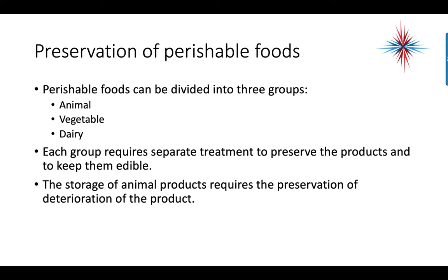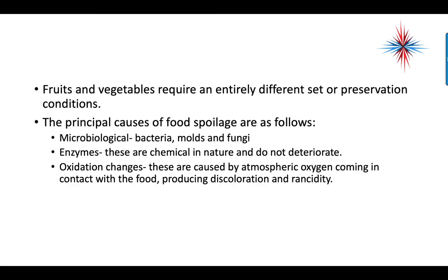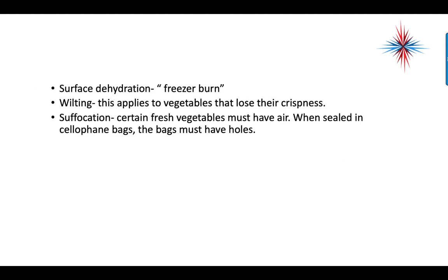The storage of animal products requires preservation against deterioration — in other words, we can't let it start to rot. Fruits and vegetables require an entirely different set of preservation conditions. The principal causes of food spoilage are microbiological bacteria, molds, and fungi; enzymes, which are chemical in nature; oxidization changes, caused by atmospheric oxygen producing discoloration and rancidity; surface dehydration, called freezer burn; wilting, which applies to vegetables that lose their crispness; and suffocation — certain fresh vegetables must have air, so when sealed in cellophane bags, the bags must have holes.